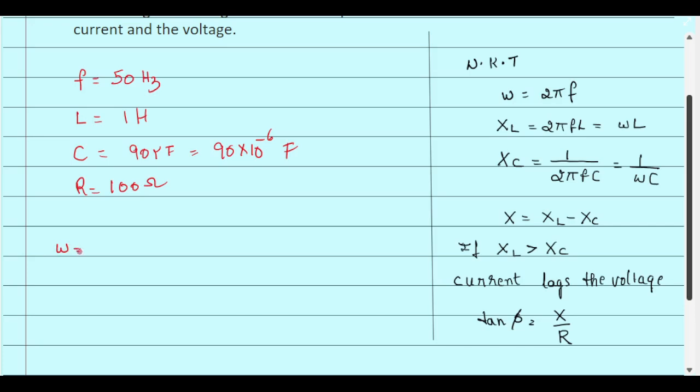We know that omega equal to 2 pi F, which is nothing but 2 into 3.141 into frequency is 50 hertz, so 50. So omega equal to 314 radian per second.